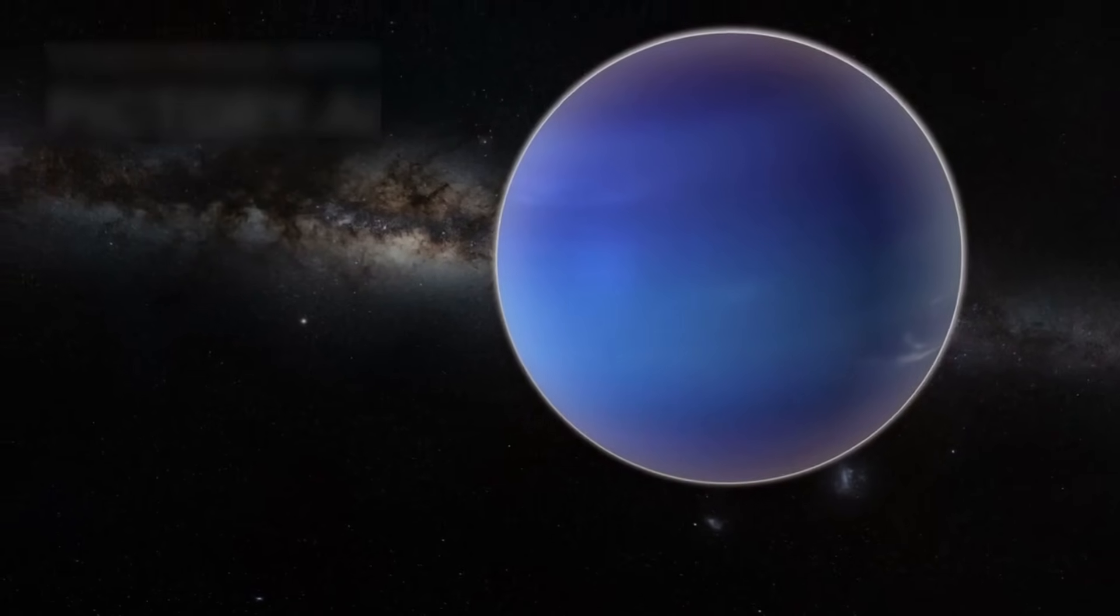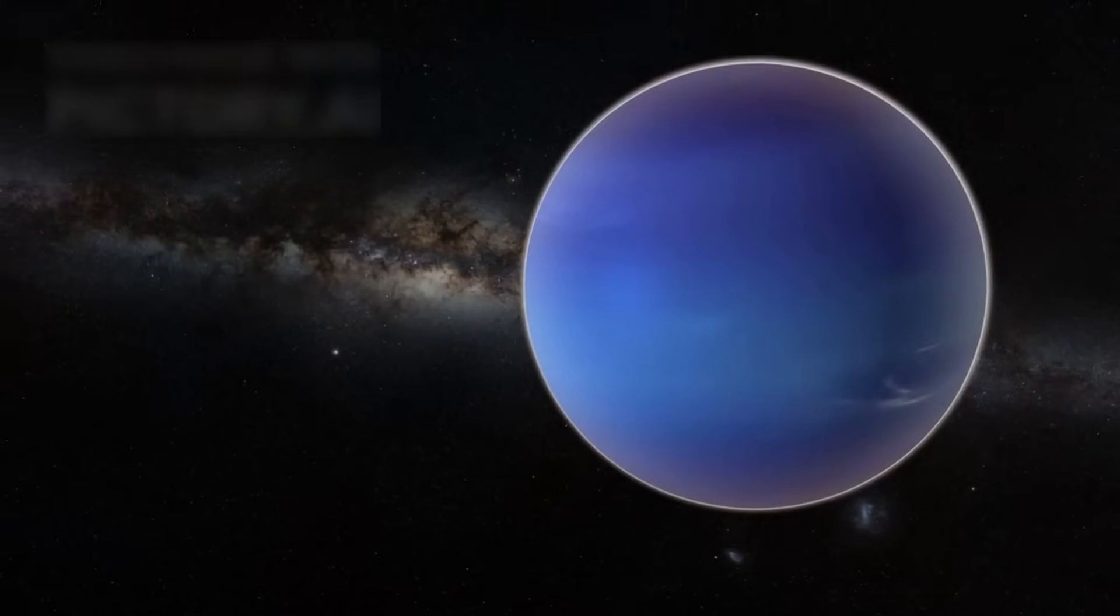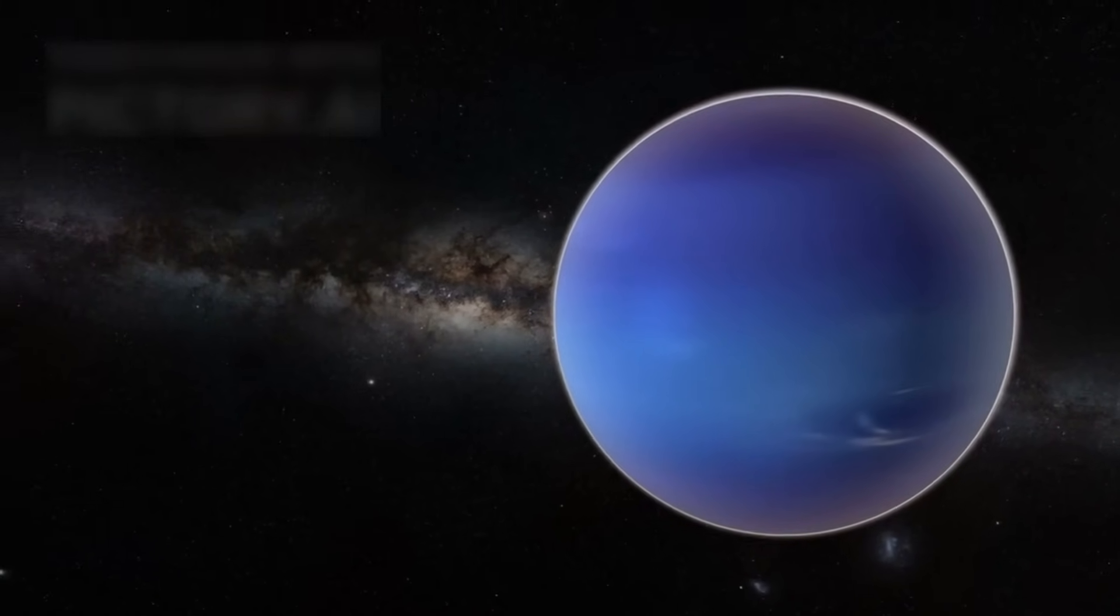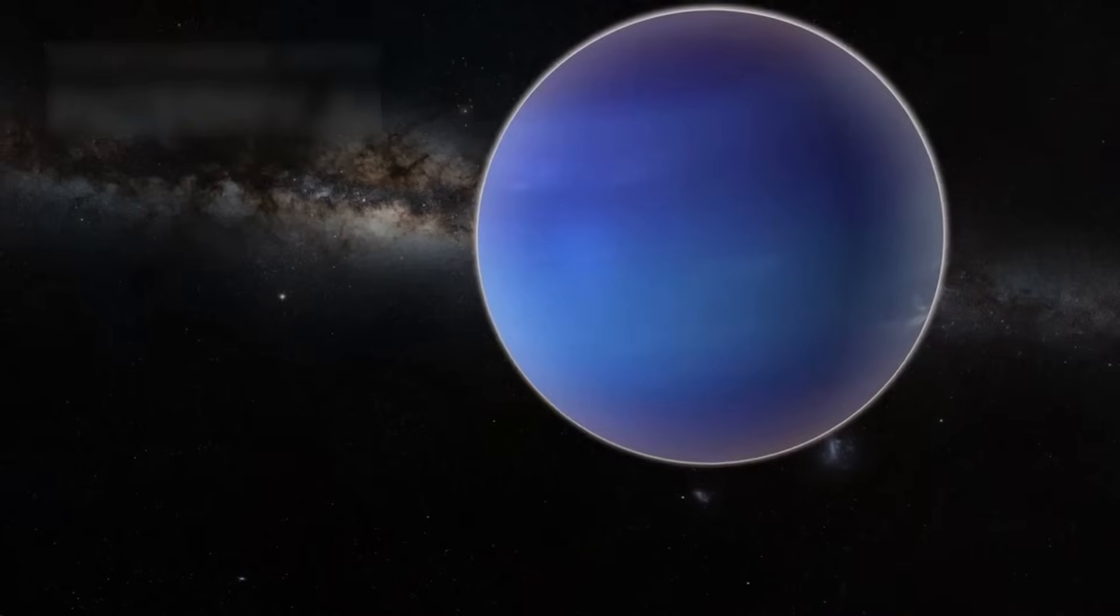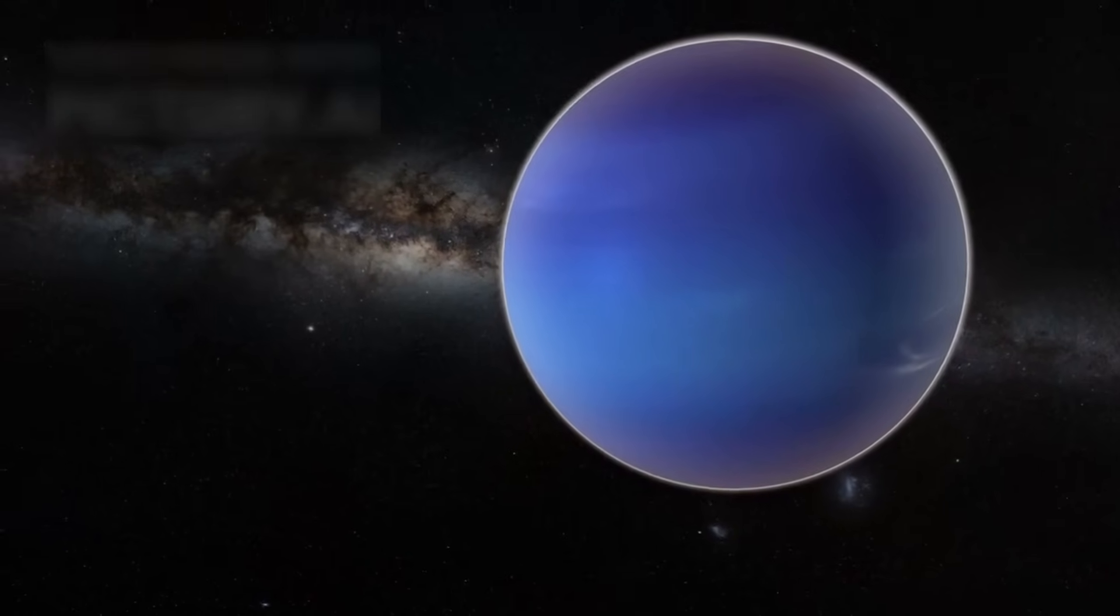Voyager 2 gave us the first close look at Uranus in 1986, and later, it became the only probe to fly near Neptune in 1989. There, it captured images of Triton's icy surface and documented storms on Neptune's surface.